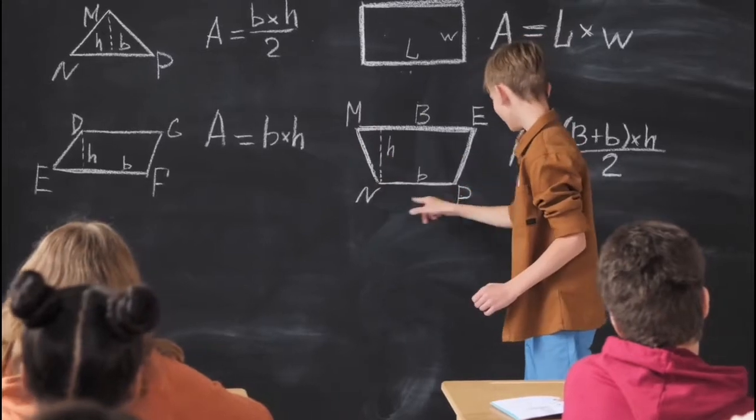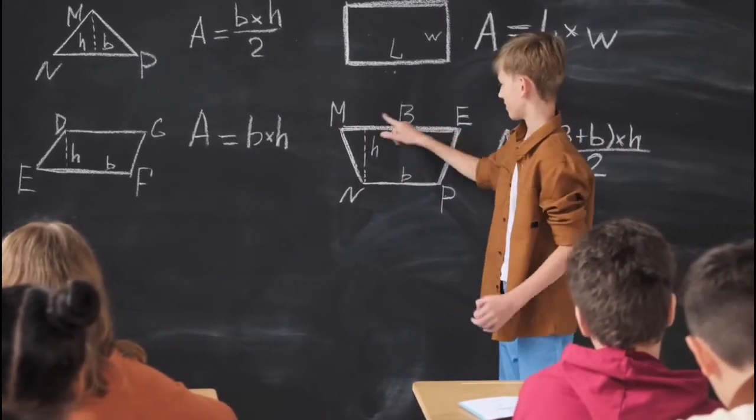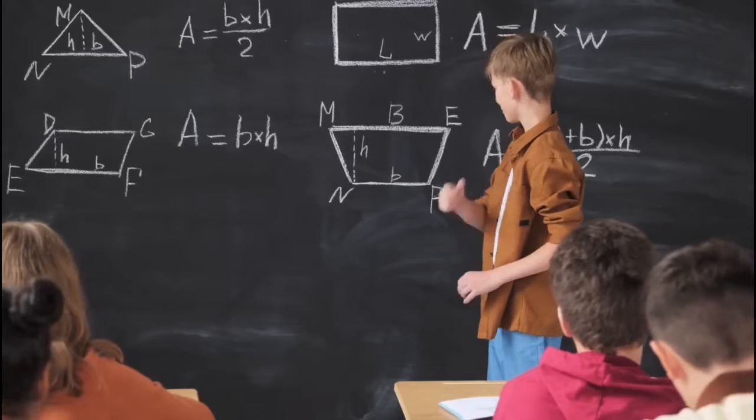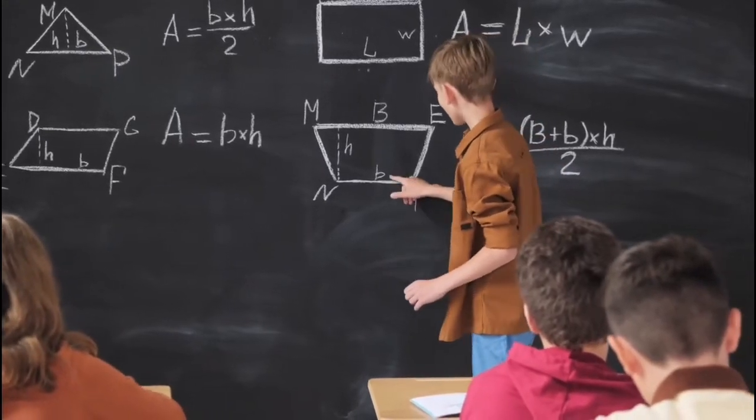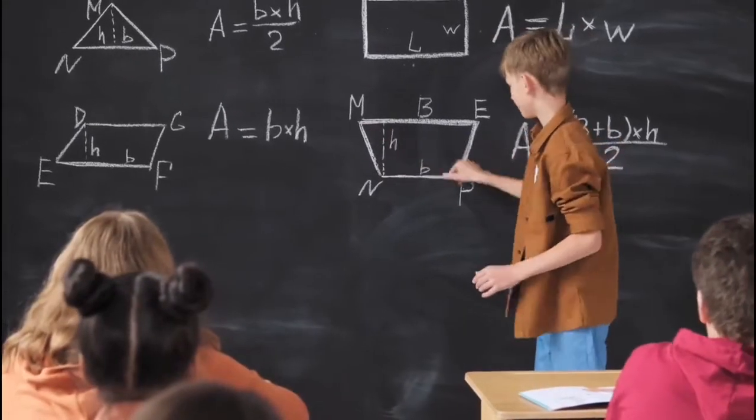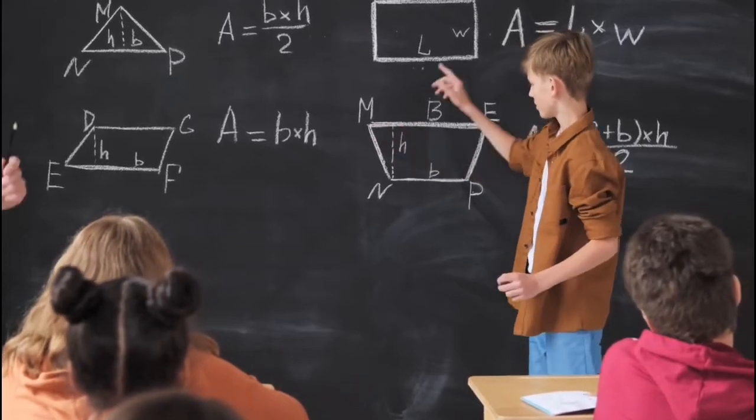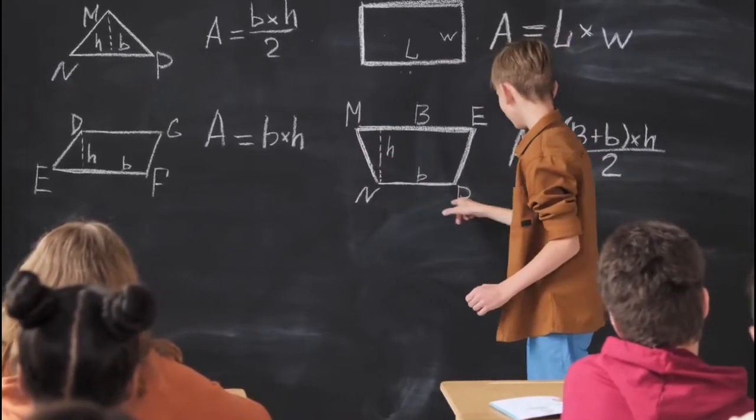Take the barometer to the top of the building and lean over the edge of the roof. Drop the barometer, timing its fall with a stopwatch. Then, using the formula x = 0.5gt², calculate the height of the building.